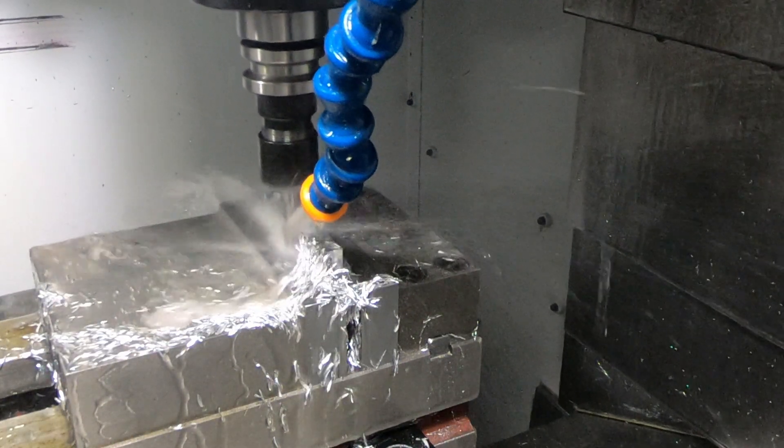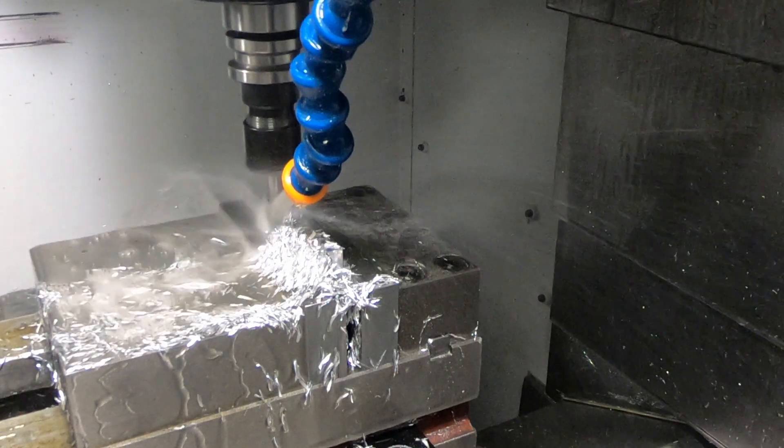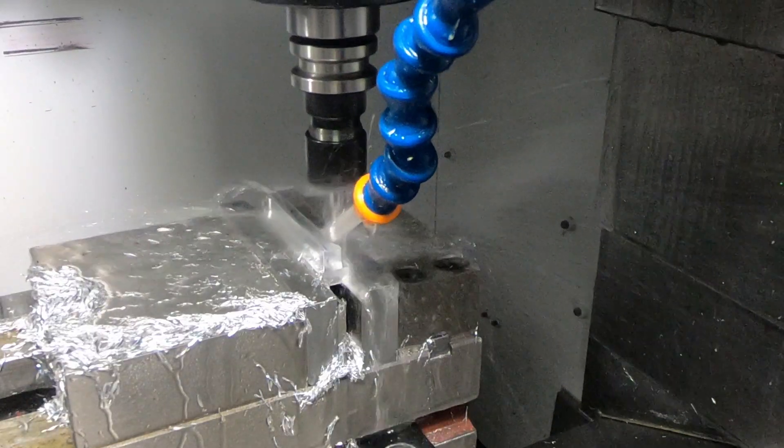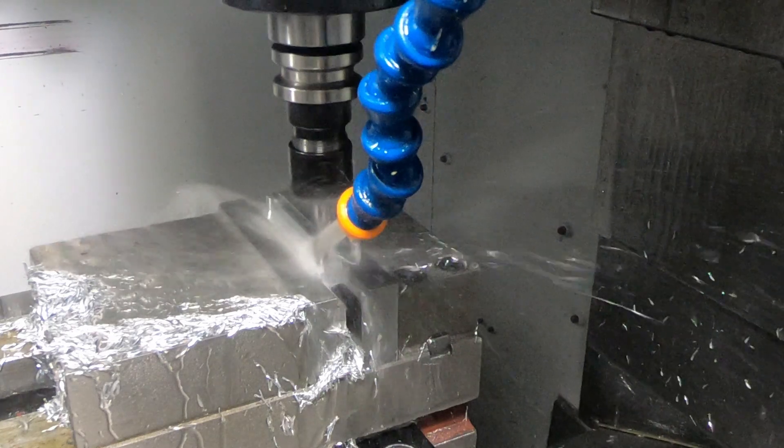The first step is to remove most of the material. This is using a three-eighths inch end mill and you can see it's making some nice large chips.